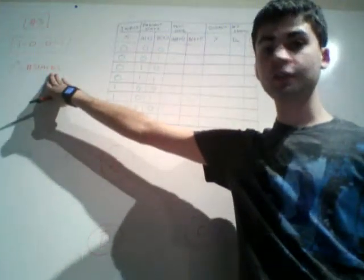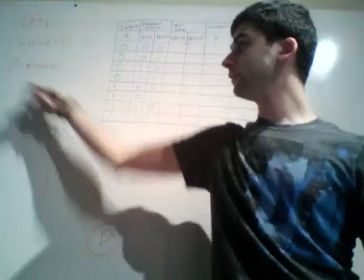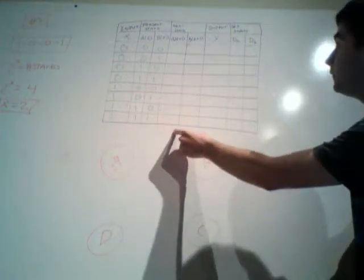Now that we know we have four states, we can use our equation: 2 to the x equals the number of states, so 2 to the x equals 4, meaning x equals 2. We need 2 D flip-flops. That's how you know you're going to have two present state bits, two next state bits, and two D flip-flop inputs.